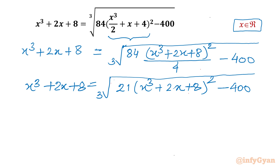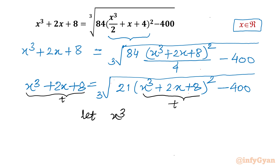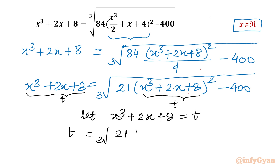Now you can see our substitution is there. I will presume this is our substitution T. So the left hand side I can consider T. Let x³ + 2x + 8 = T. So this equation will become T = ∛(21T² − 400).